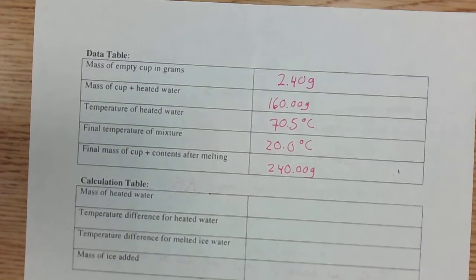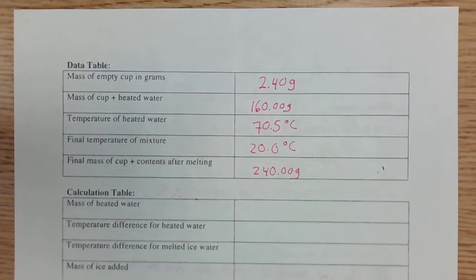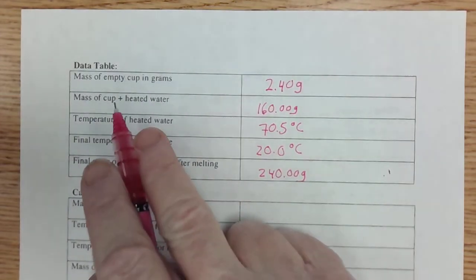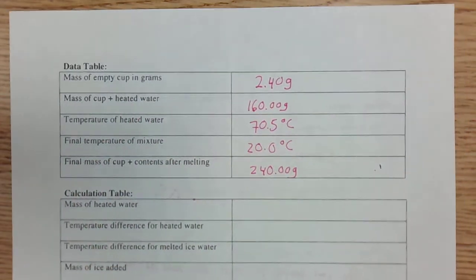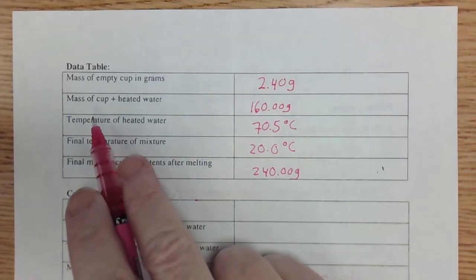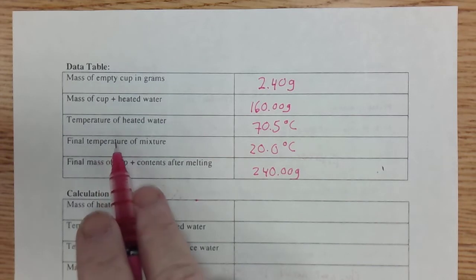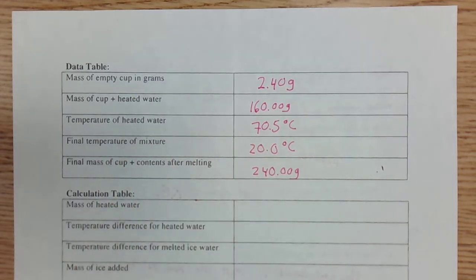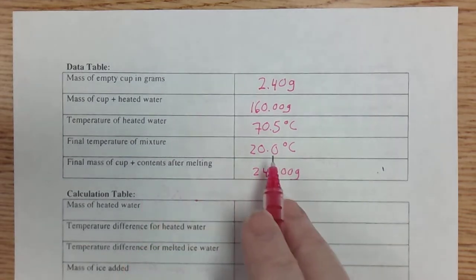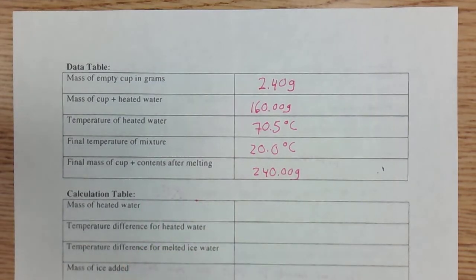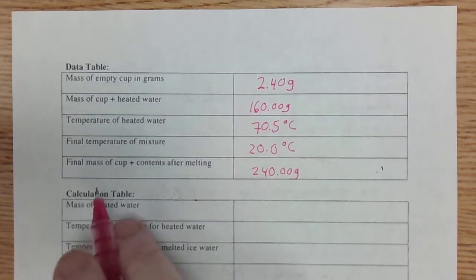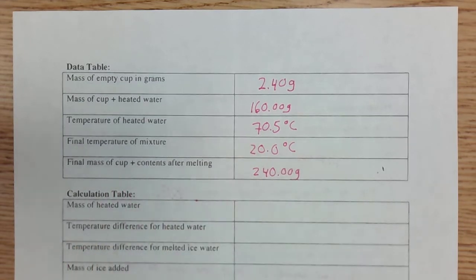Let's flip over to the other side now. And here is our sample data. The mass of the empty cup in grams is about 2.40. Cup and water 160.00 grams. The heated water was at 70.5 degrees Celsius. The final temperature of the mixture, 20.0 degrees Celsius. And the final mass of the cup and contents was 240.00 grams.